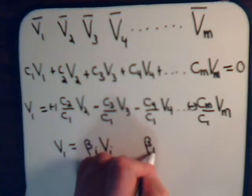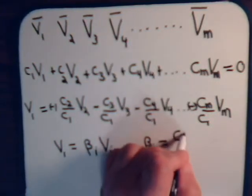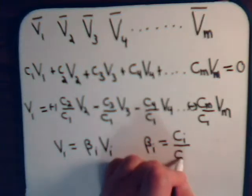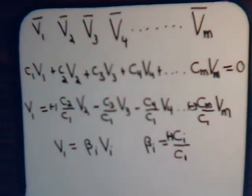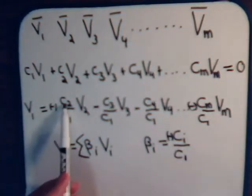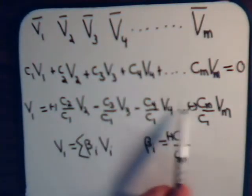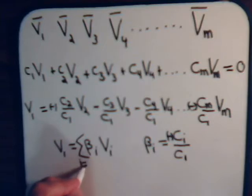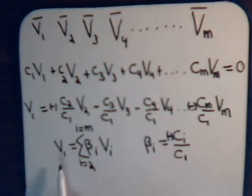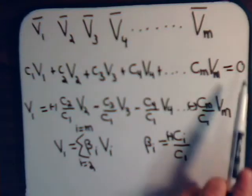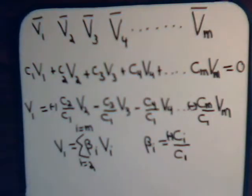Where beta i equals minus ci divided by c1. So i will be summed over from i equal 2 to i equal m. So that's just a general expression for vector v1, assuming that these orthogonal vectors are linearly dependent.